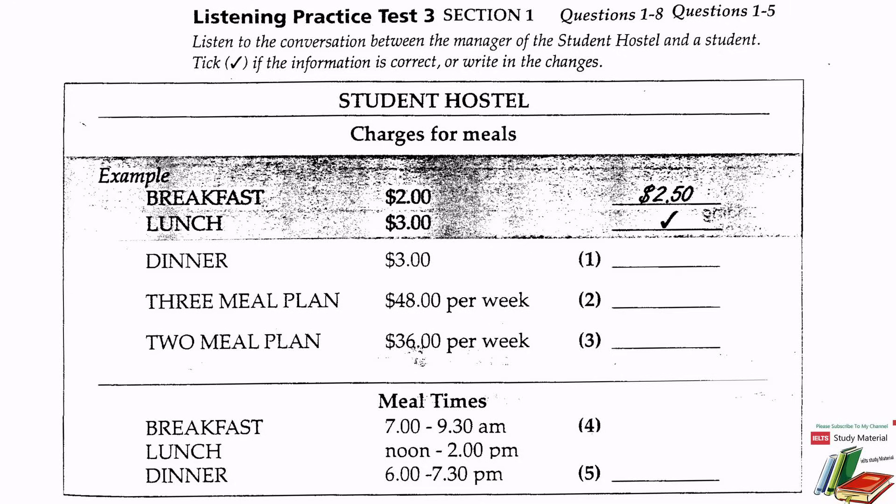Breakfast costs two dollars fifty so the change has been written in. Lunch still costs three dollars so the information has been ticked. Now we shall begin. You should answer the questions as you listen because you will not hear the recording a second time. Now listen carefully and answer questions one to five.